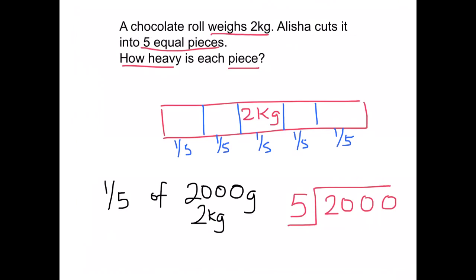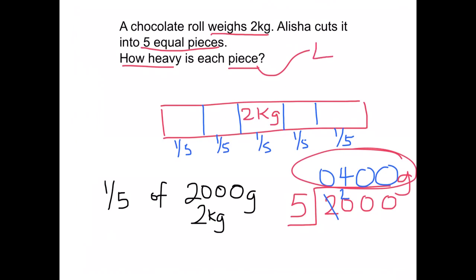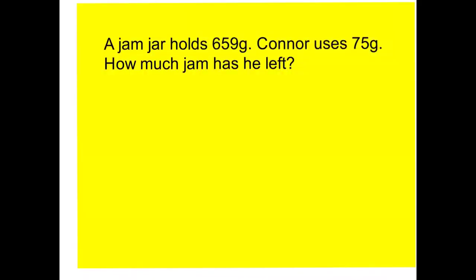Let's look at the sum: 5 into 2 does not go; 5 into 20 there are four; 5 into 0 is 0; 5 into 0 is 0 — so the answer is 400 grams. Each piece of the chocolate roll would be 400 grams.